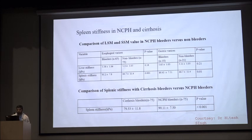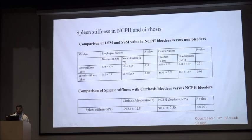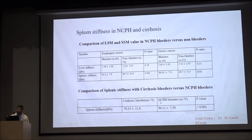Another study from Dr. Hitesh assessed spleen stiffness in patients with esophageal varices who were bleeders. They found higher spleen stiffness of 91 kPa in bleeders compared to non-bleeders in the non-cirrhotic portal hypertension group. For gastric varices, spleen stiffness was 89 compared to 66 in NCPH only. When comparing cirrhosis and non-cirrhotic bleeders, non-cirrhotic portal hypertension bleeders had higher spleen stiffness of 90 compared to 79 in cirrhosis bleeders.